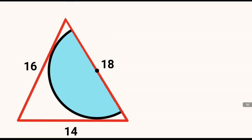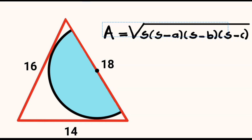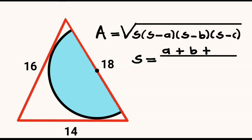We calculate the area of this scalene triangle using Heron's formula, which states that the area of any triangle with side lengths A, B, and C will be equal to the square root of S multiplied by S minus A, multiplied by S minus B, multiplied by S minus C. Here S is equal to the semi-perimeter, which is A plus B plus C divided by 2.